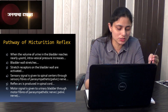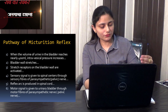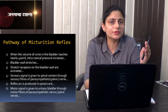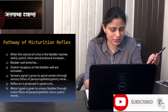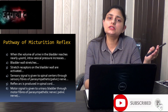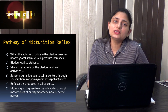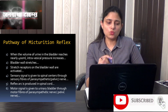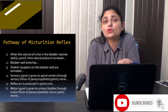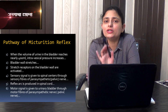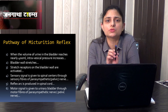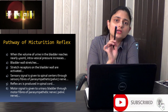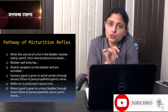Now we will talk about the pathway of this micturition reflex. Filling of the urinary bladder to about 400 ml stimulates the stretch receptors in the wall of the bladder because the bladder is now distended. These stretch receptors stimulate the pelvic nerves, which take the stimulus to the spinal cord through their sensory nerve fibers. A reflex arc is then produced in the spinal cord.